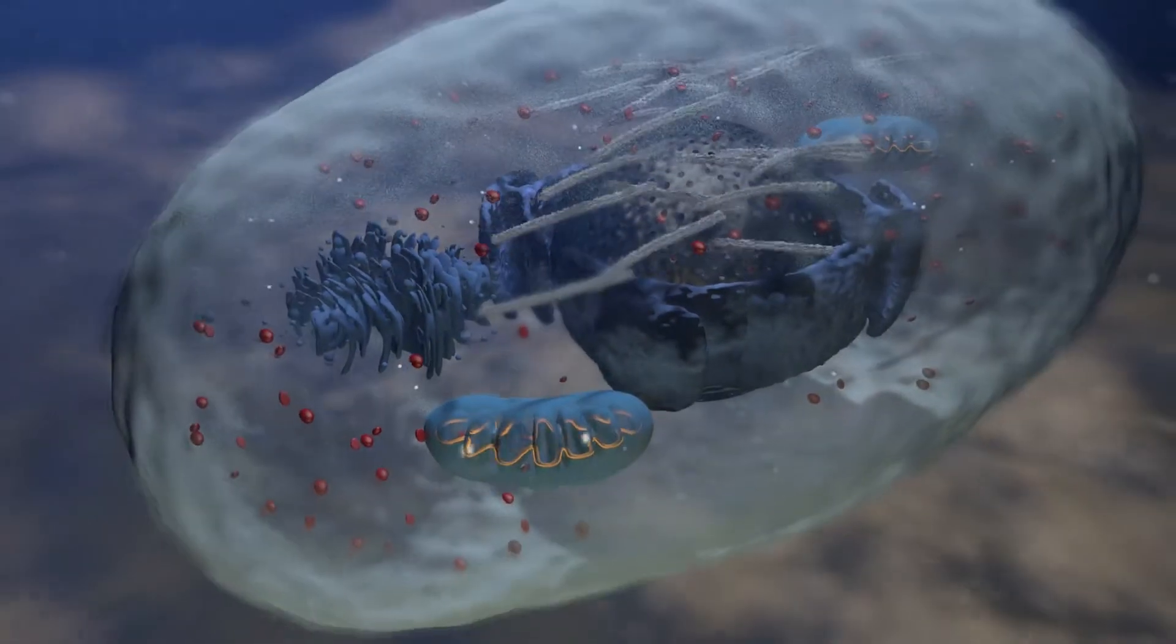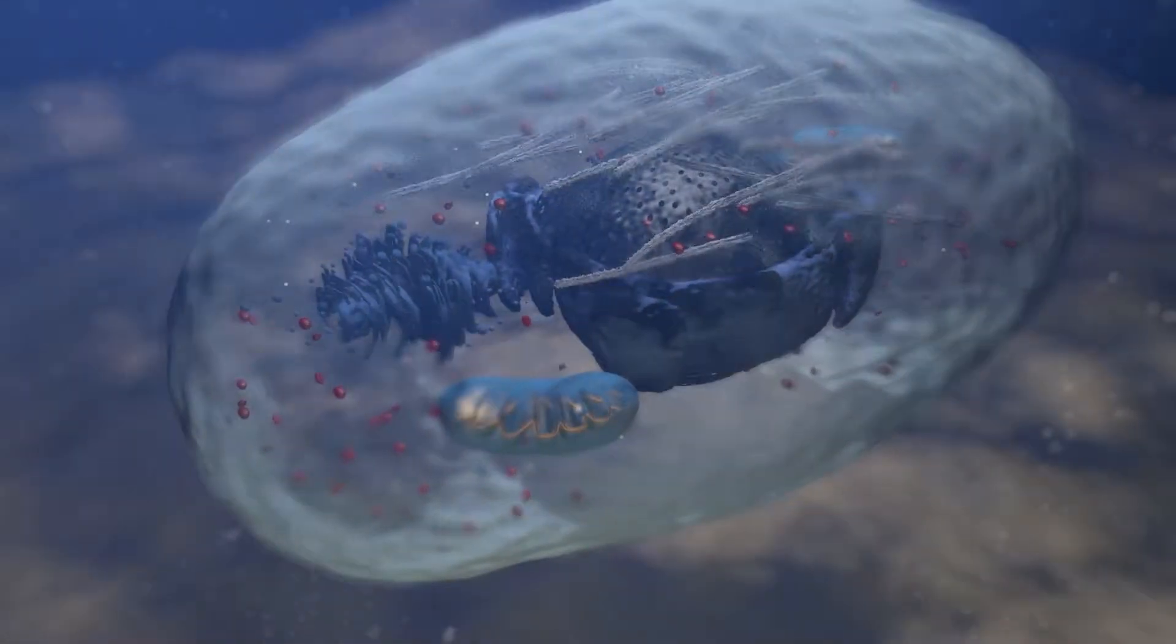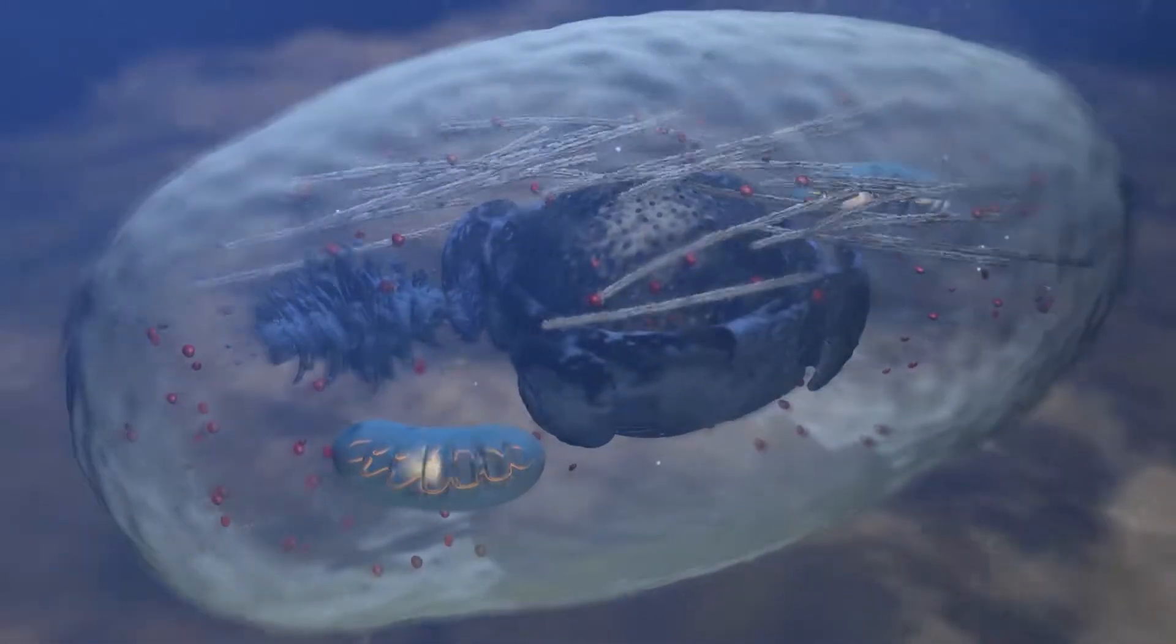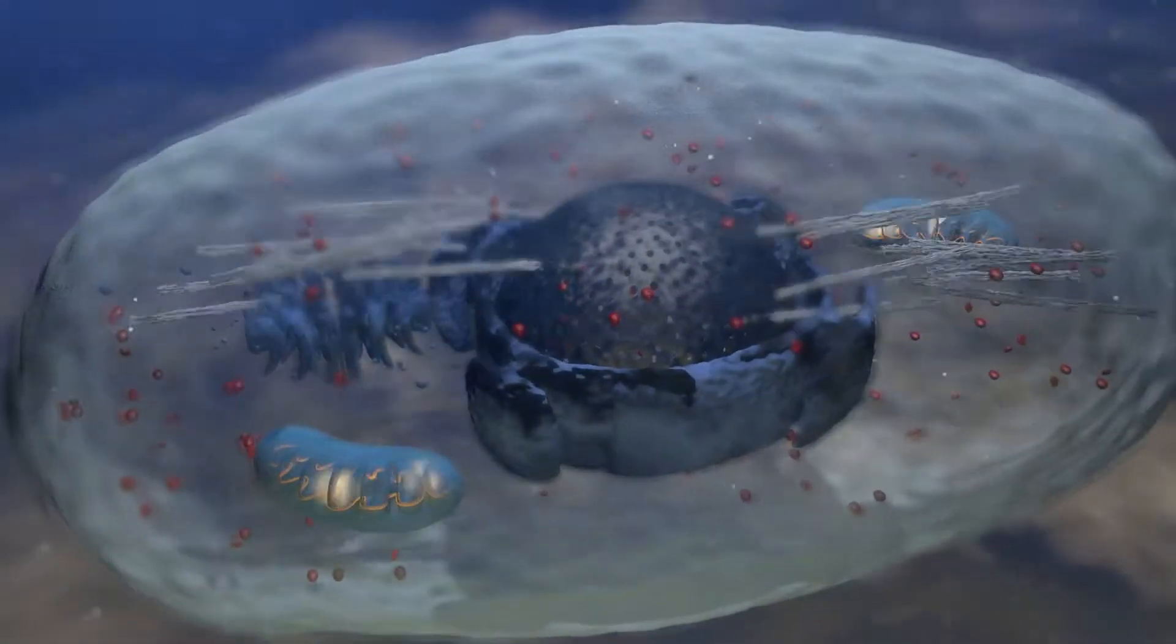But by sequestration of chromosomes in the nucleus, they are no longer attached to the host cell wall, so they cannot be separated and apportioned to daughter cells by the normal means.